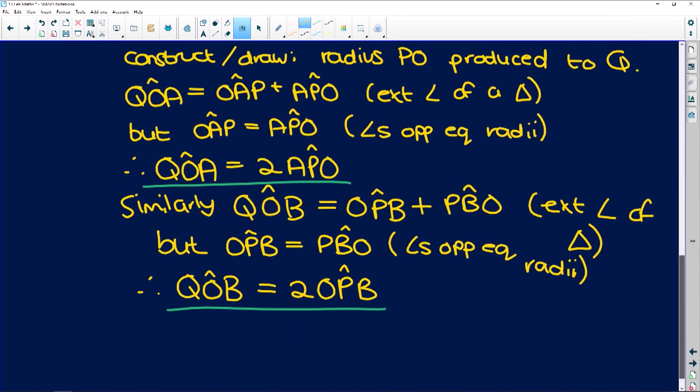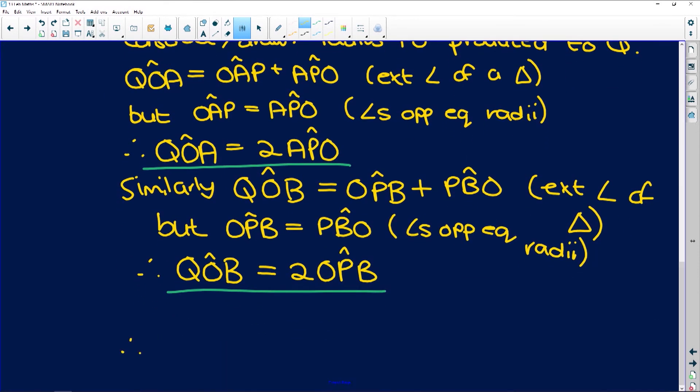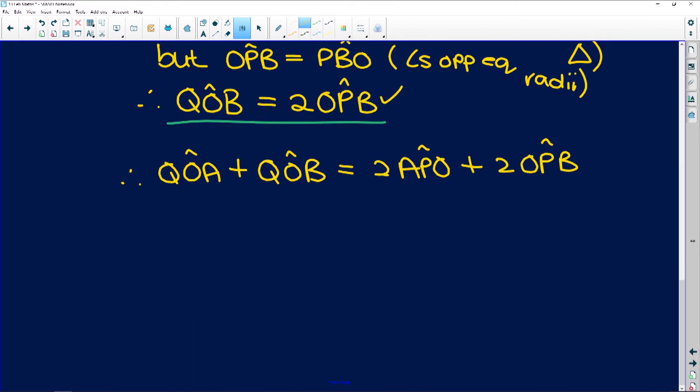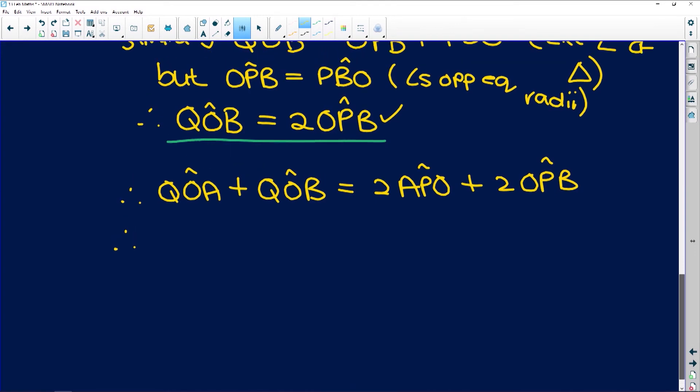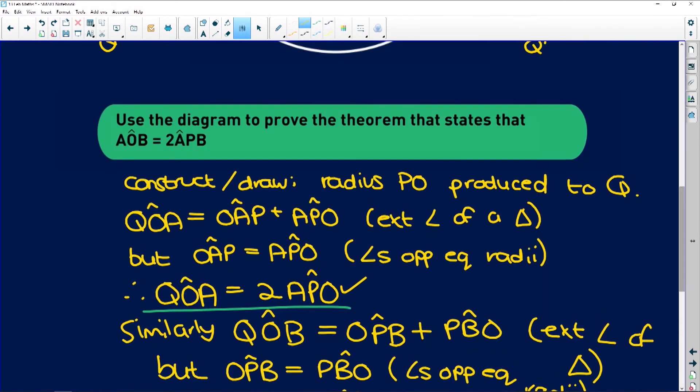So therefore, QOA plus QOB is equal to 2APO, which is what we proved over here, plus 2OPB, which is what we proved over there. And so, these two angles that add up to each other are going to give us that angle AOB.